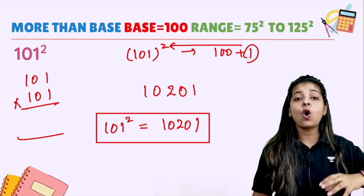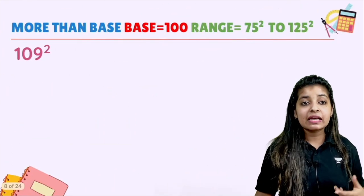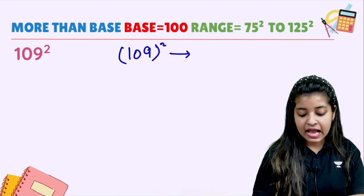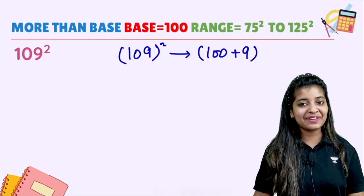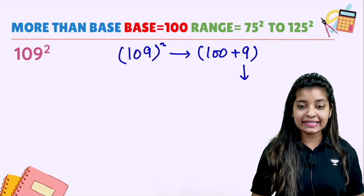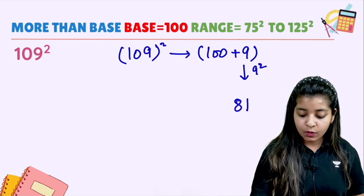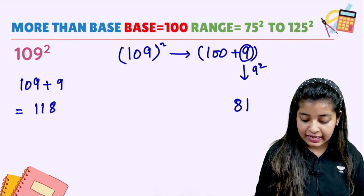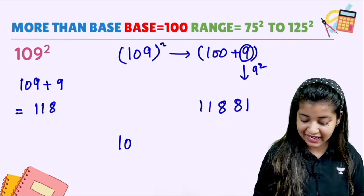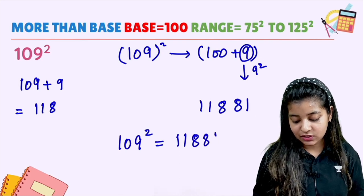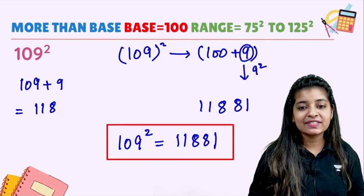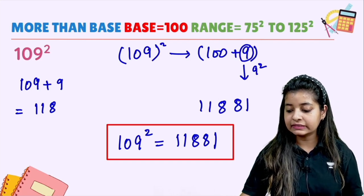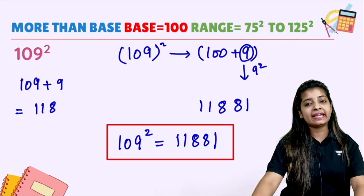Let's move towards another example. 109 squared — how can we solve this? 109 can be written as 100 plus 9. 9 squared is 81. Now add 9 to 109: 109 plus 9 gives 118. Write 118 here, and this is your answer. So 109 squared is equal to 11881. This is your answer everybody.